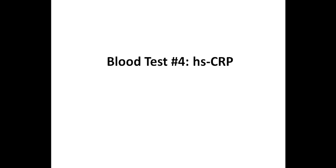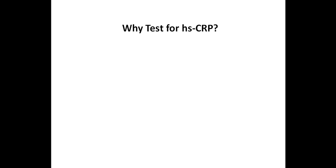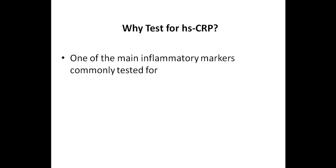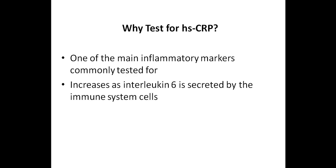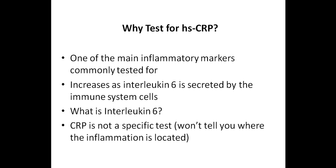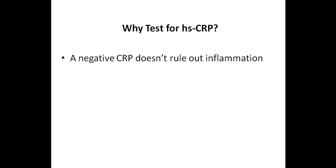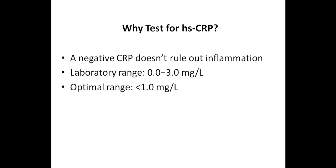The fourth marker that should be tested by those with autoimmune conditions is HSCRP, which is high-sensitivity C-reactive protein. High-sensitivity C-reactive protein is one of the main inflammatory markers commonly tested for, and it increases as interleukin-6, or IL-6, is secreted by immune system cells. Interleukin-6 is a protein that is a marker of inflammation. CRP is not a specific test — if it is positive, it means you have inflammation, but it won't tell you where the inflammation is located. It's also important to understand that a negative CRP does not rule out inflammation. A common laboratory reference range is shown here, although the optimal range is less than 1 mg per liter. On this report, you can see that this person's value is clearly elevated.